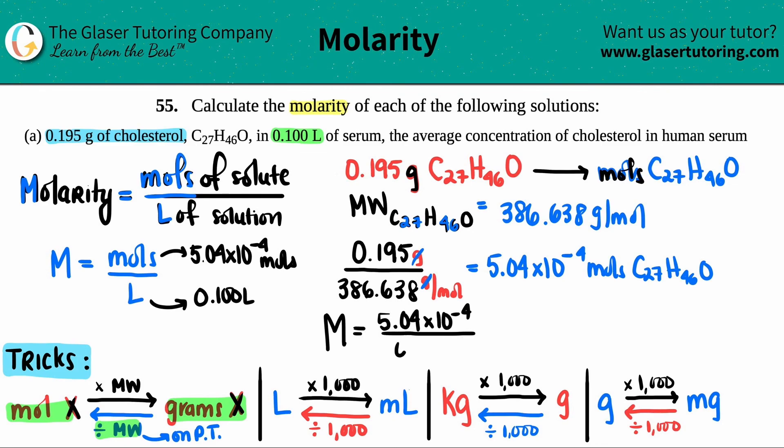All divided by 0.100. Let's just do it: 5.04 × 10⁻⁴ divided by 0.1. Yeah, 5.04 × 10⁻³. Units for molarity is either capital M or, since these units didn't cancel out...